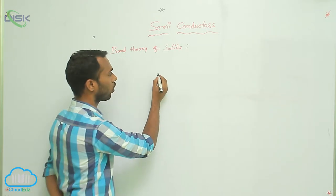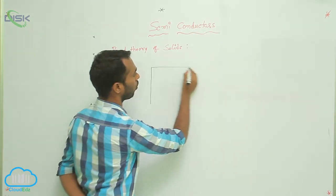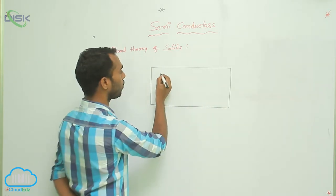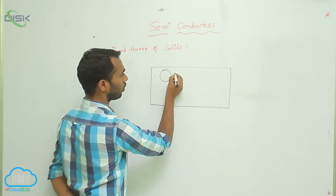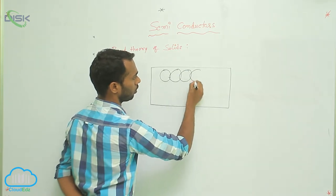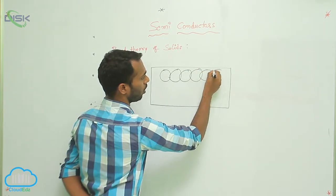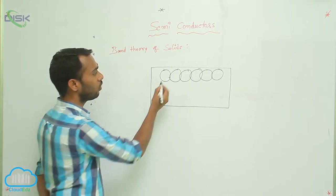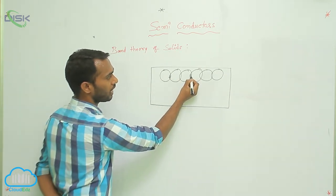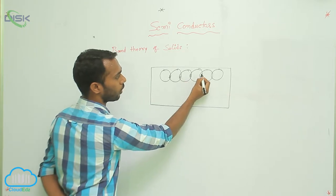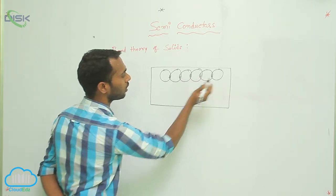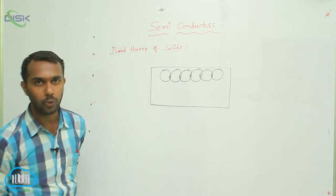Taking a solid material as an example — in this solid, atoms are very close to each other. Because they are very close, interlocking of atoms takes place.